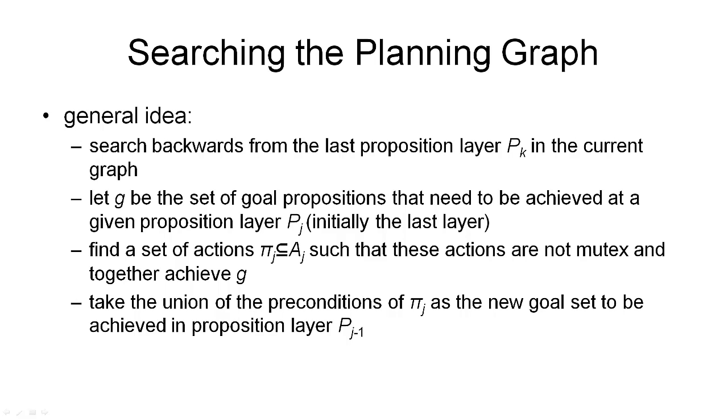And here is an overview of the search procedure followed by graph plan. We start by searching backwards from the last proposition layer in our planning graph. Of course, this layer PK must contain all the goal propositions, and none of these goal propositions must be mutex. Otherwise, the planning graph cannot contain a solution plan.